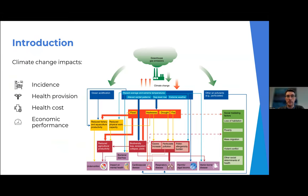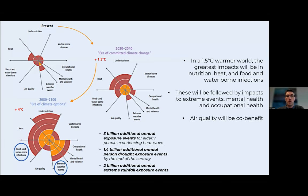Climate change has many cascading impacts on health systems and human health. It affects ocean acidification, air pollutants, temperature, rainfall patterns, sea level rise, and extreme weather events such as heat waves, droughts, fires, and floods. These ultimately impact nutrition, mental health, cardiovascular and respiratory diseases. We have to figure out the chain of causality from climate change as a global phenomenon down to biophysical impacts and health-related impacts for human beings.